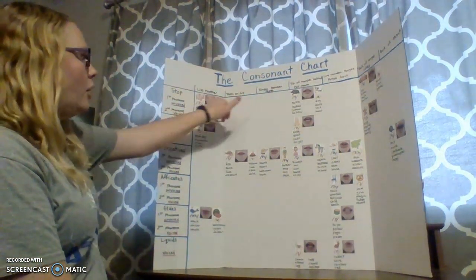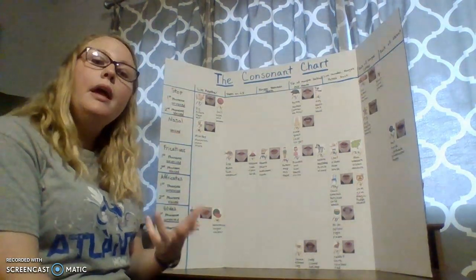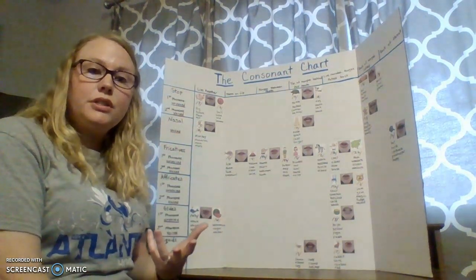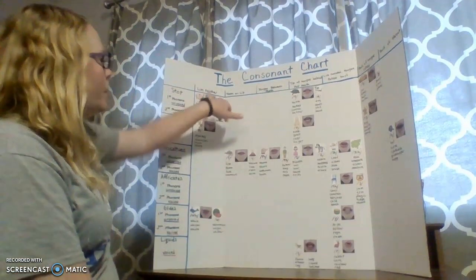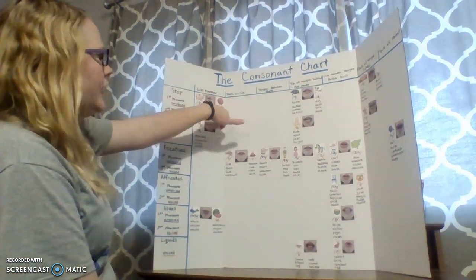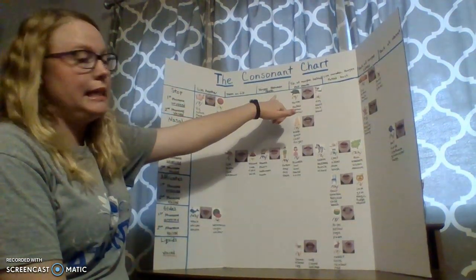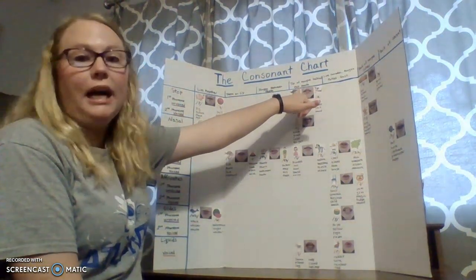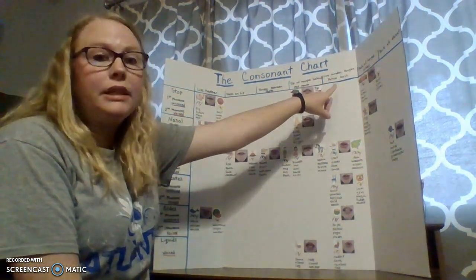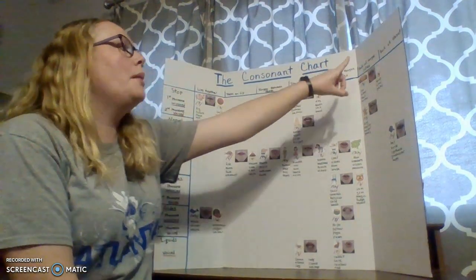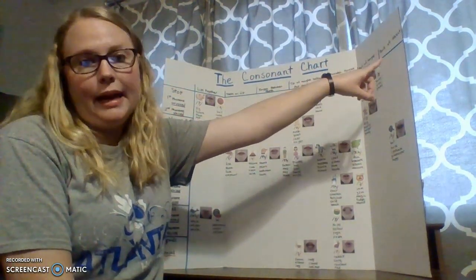Across the top, it gives the person using this, or the child, instructions on how the consonant is formed in the mouth. So we have: lips together, teeth on lip, tongue between teeth, tip of tongue behind top teeth, lips rounded, tongue pulled back, back of tongue lifted, and back of throat.